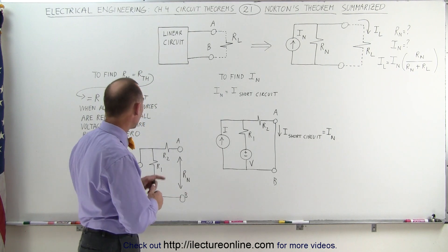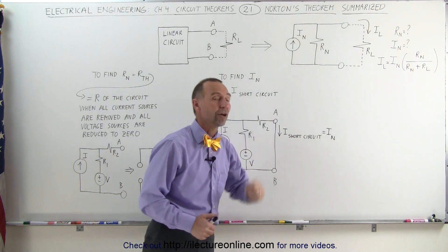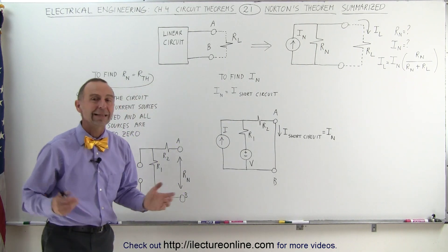Once you have those two, once you have the Norton resistance and we have the Norton current, we can solve the circuit very readily. That's how it's done.